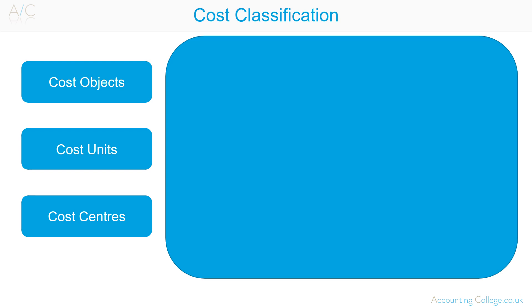Cost Classification. As F2 students, you are required to know the different ways of classifying and describing costs. Some terminology you should know here are cost objects, cost units and cost centres.